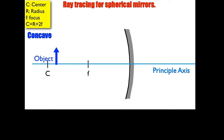This video is going to show you how to draw the four incident and reflection rays for a spherical concave mirror. A couple things about a concave mirror: because it is part of a sphere, it's going to have a center, and the focus is half the distance between the center and the edge of the mirror.